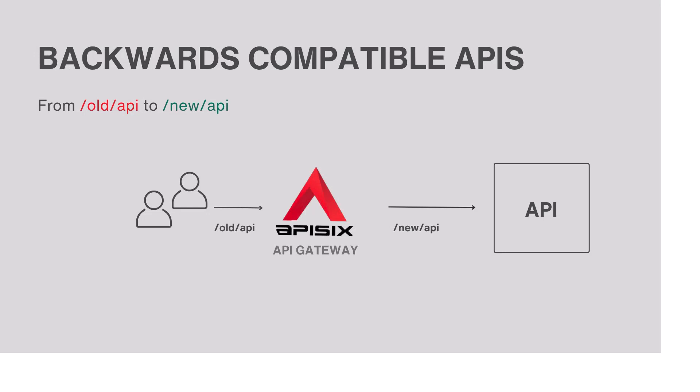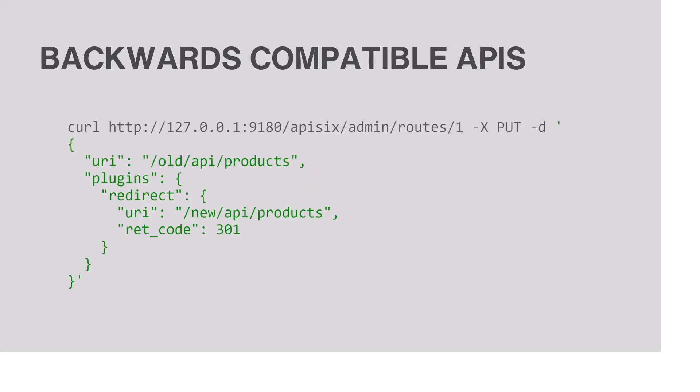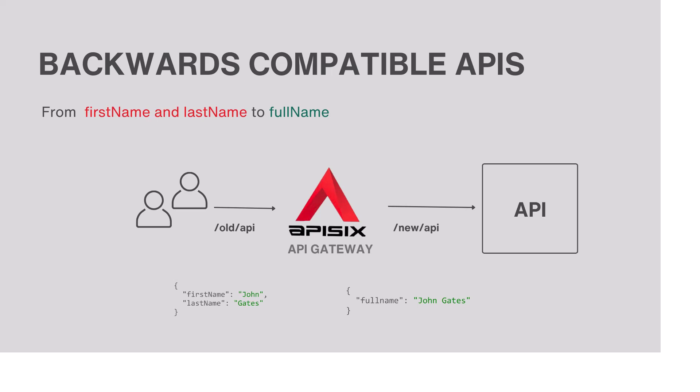With APISIX, you can also make your APIs backwards compatible. Sometimes multiple API versions cannot always get you far, and some changes can be unavoidable. In this case, the API gateway can act as an interface between your clients and APIs — the client-facing interface remains the same while your API changes. For example, if you change your API endpoint from '/old/api' to '/new/api', the gateway can redirect the client request to the new API endpoint without any change to the client applications.